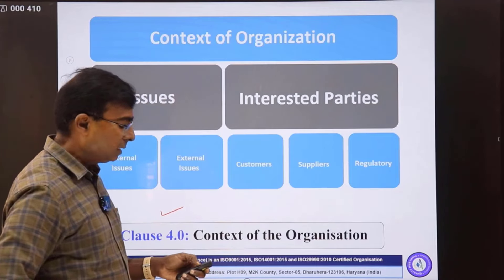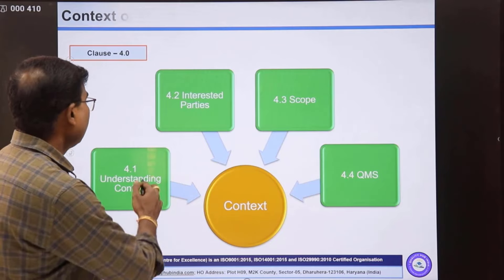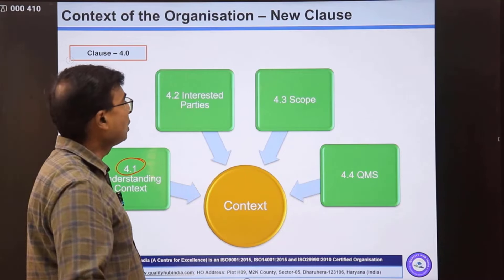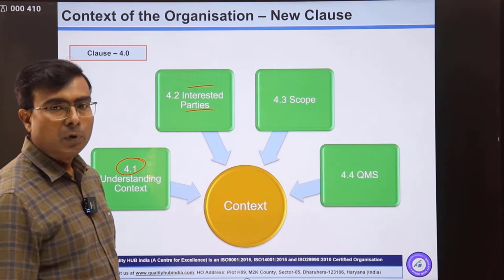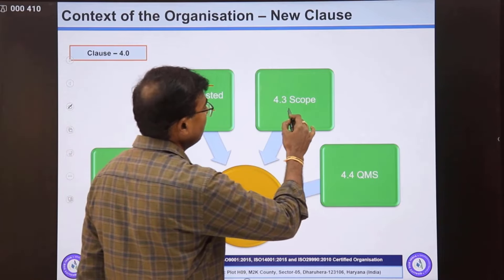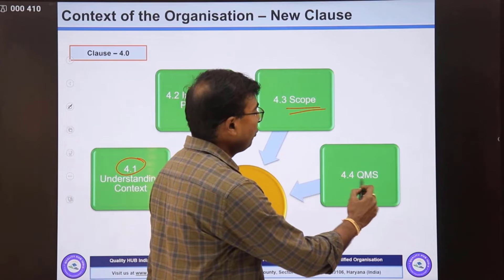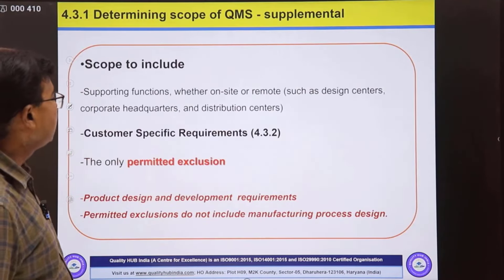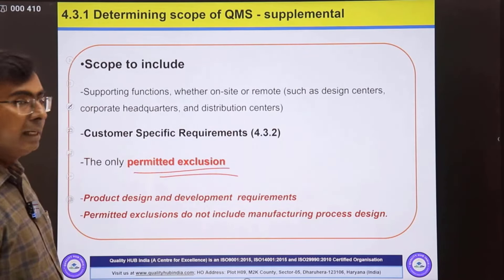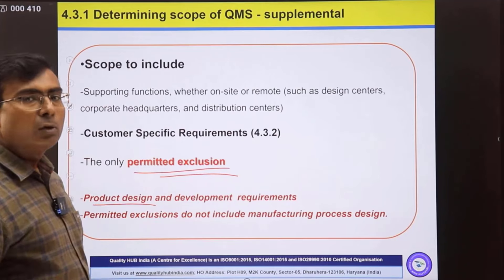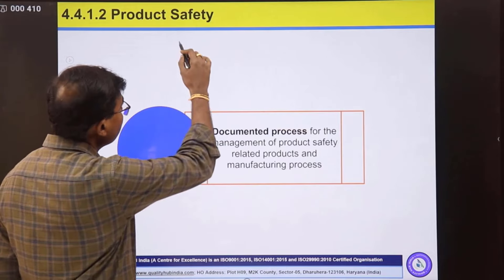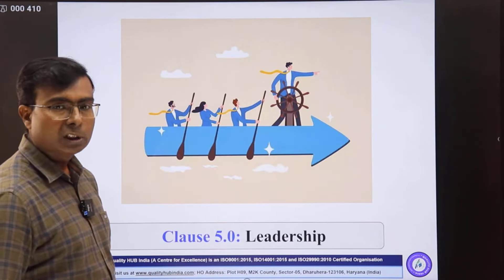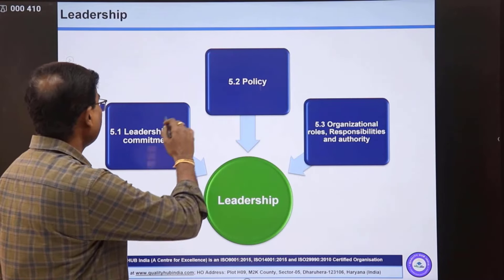Clause four is the context of the organization. Sub-clause 4.1 talks about understanding the context — identifying the purpose of the organization. 4.2 covers needs and expectations of interested parties. 4.3 covers the scope of the system. In IATF 16949, 4.3.1 talks about permitted exclusions — only product design can be excluded; process design cannot be excluded. 4.4.1.2 requires having a documented procedure for product safety.